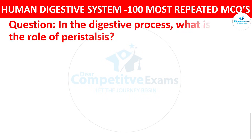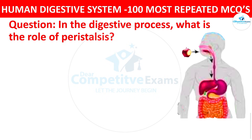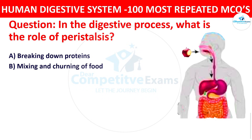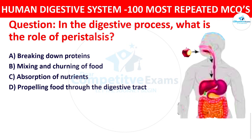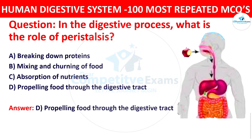Question number twenty-two: In the digestive process, what is the role of peristalsis? Your options are breaking down proteins, mixing and churning of food, absorption of nutrients, or propelling food through the digestive tract. The right answer is propelling food through the digestive tract. Peristalsis is the muscular contraction and relaxation that moves food along the digestive tract.